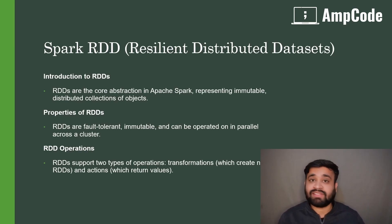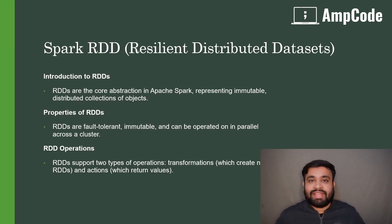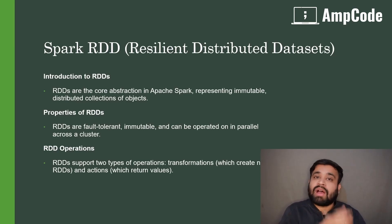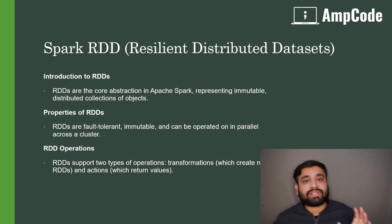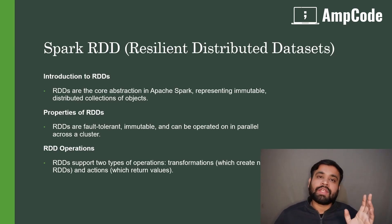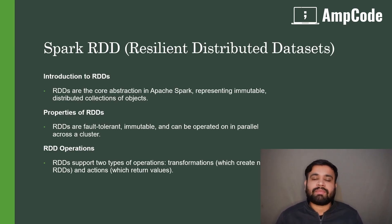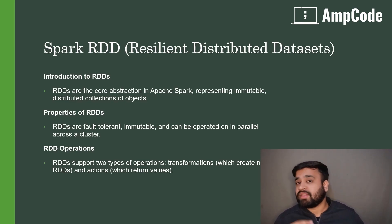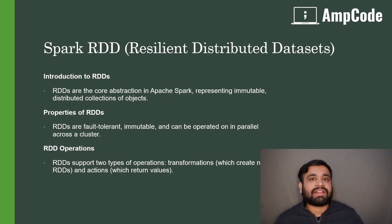The second type of operation is actions. Actions return something — they return a value out of those transformations and RDDs. Basically, actions allow us to save data as a text file, check the count of the RDD, and so on.